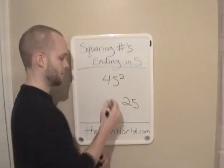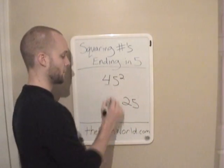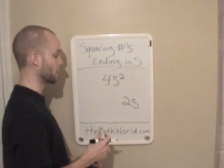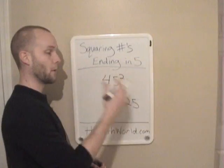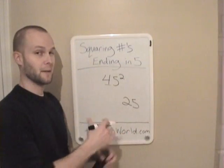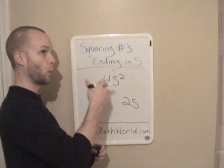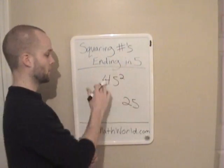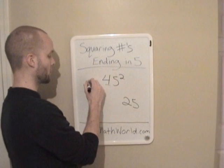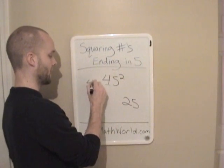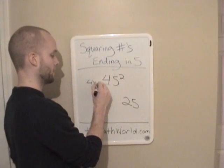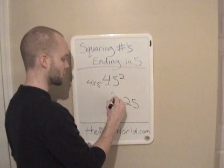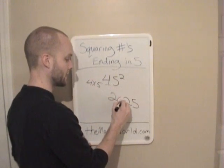Then you're going to take your first number — in this case it's 4 — and you're going to multiply it by the next highest number. So you're going to multiply 4 times 5, and 4 times 5 is 20, so you just write down 20.